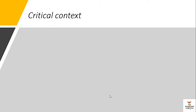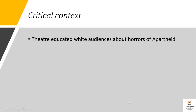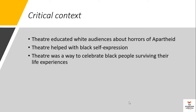Moving on to the critical context — in terms of what this play aimed to do, it aimed to educate white audiences about the horrors of apartheid. But not only this play — protest theater more broadly aimed to conscientize white audiences about the horrors of apartheid. Apart from that, it also helped black people with self-expression and helped black people to celebrate the fact that they survived their life experiences. That brings us to the end of the Woza Albert play study. I hope this was helpful in refreshing your knowledge about the play.